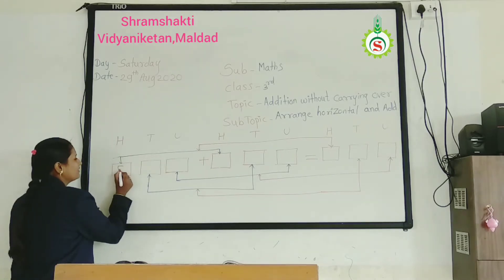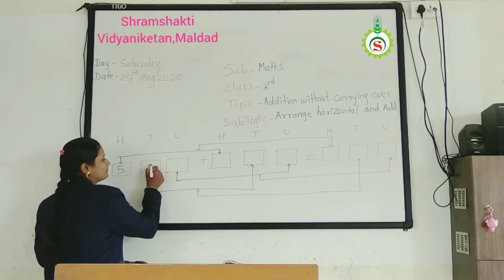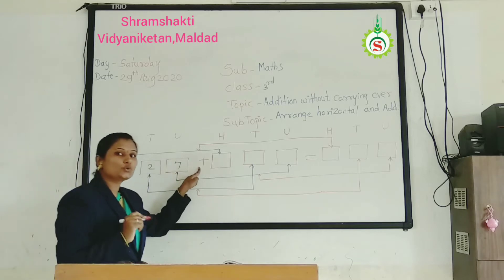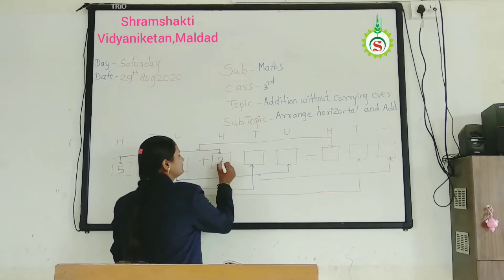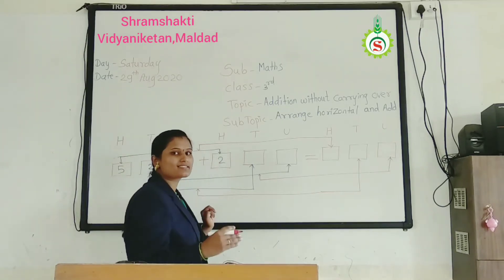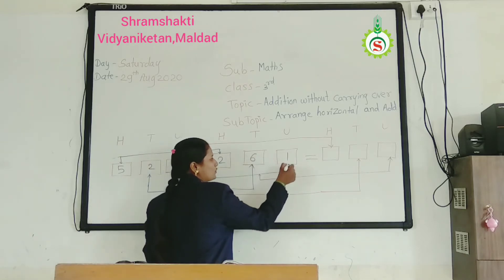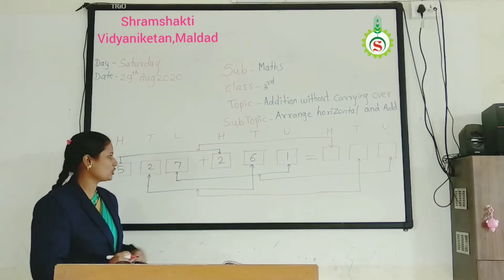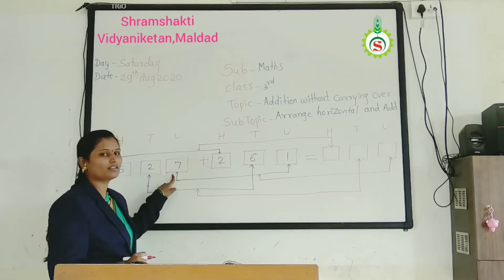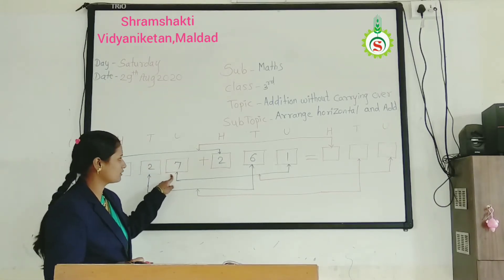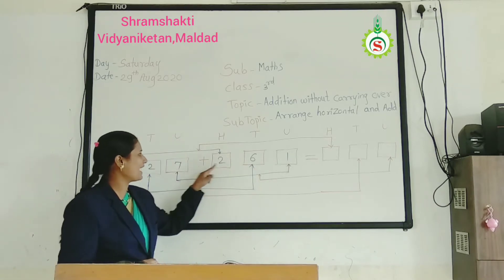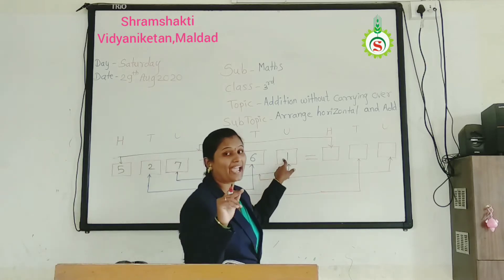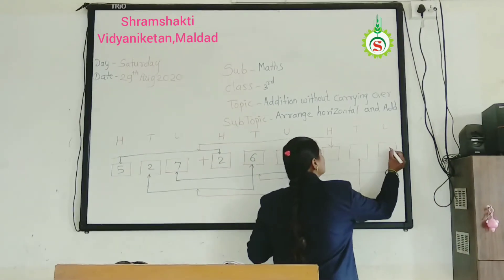See the next sum: 500, 2 tens, 7 units. Add 200, 6 tens, 1 unit. First of all, you see which column? Unit column. 7 add 1 is 8. Write down at unit column: 8.